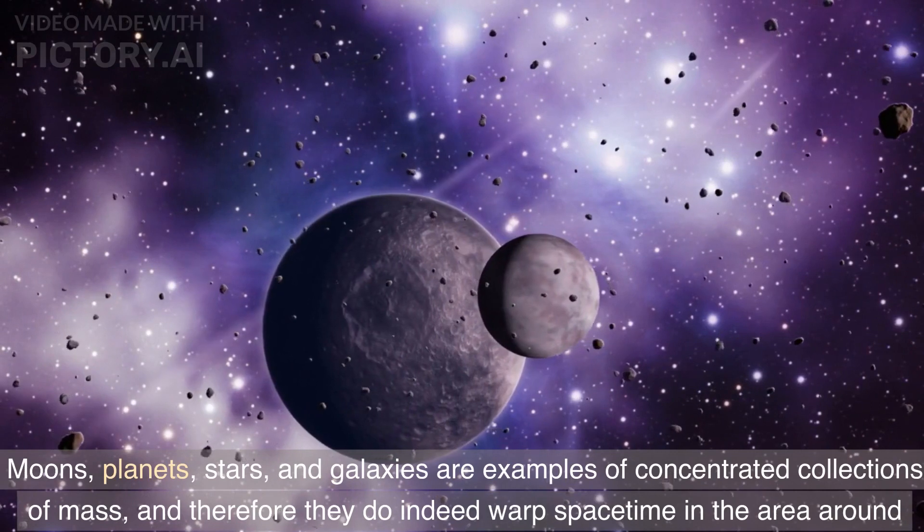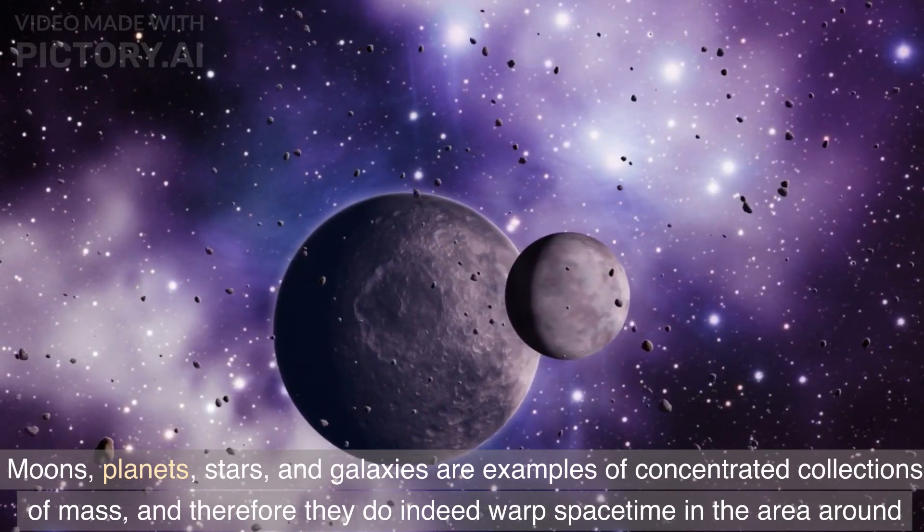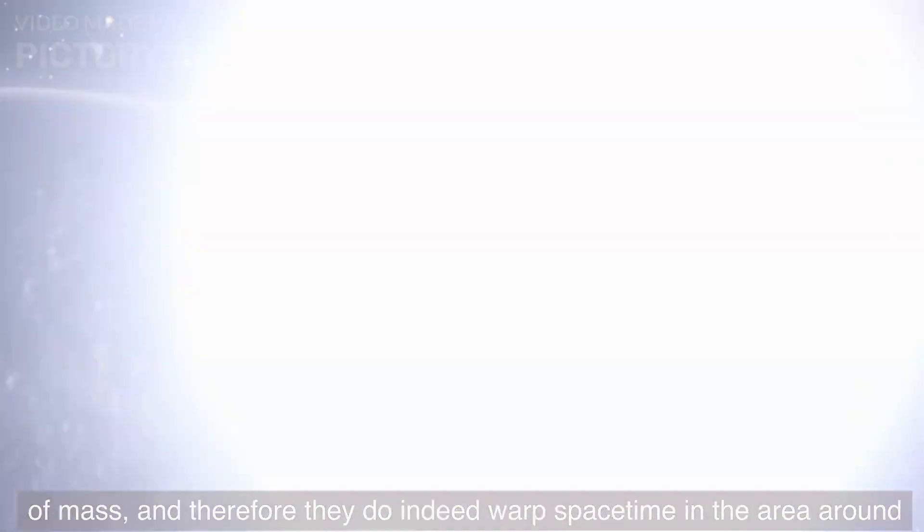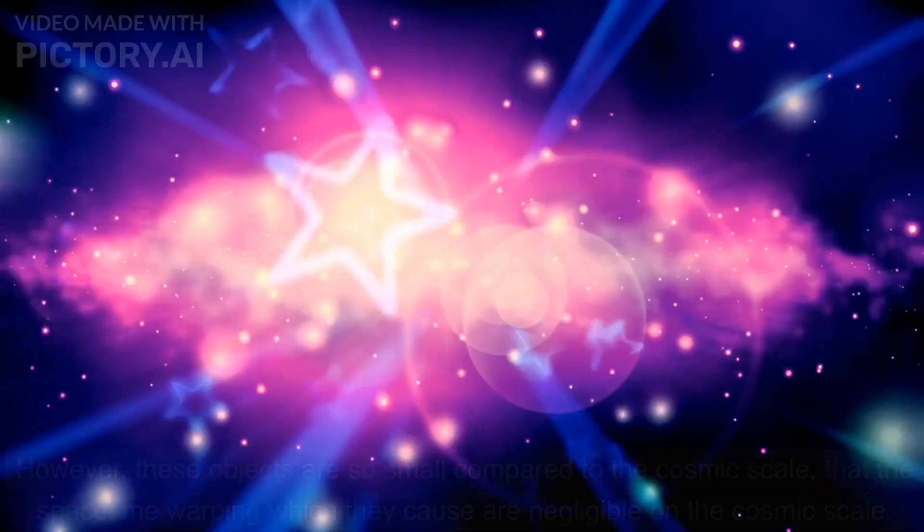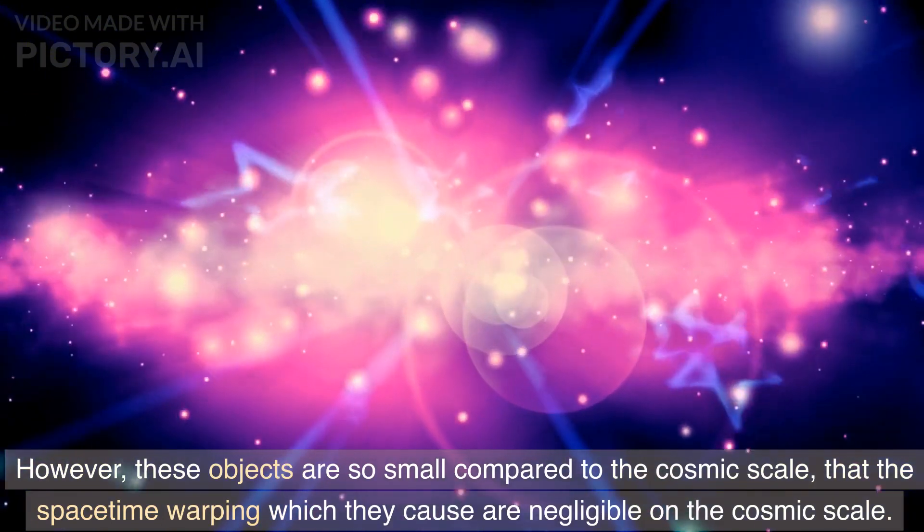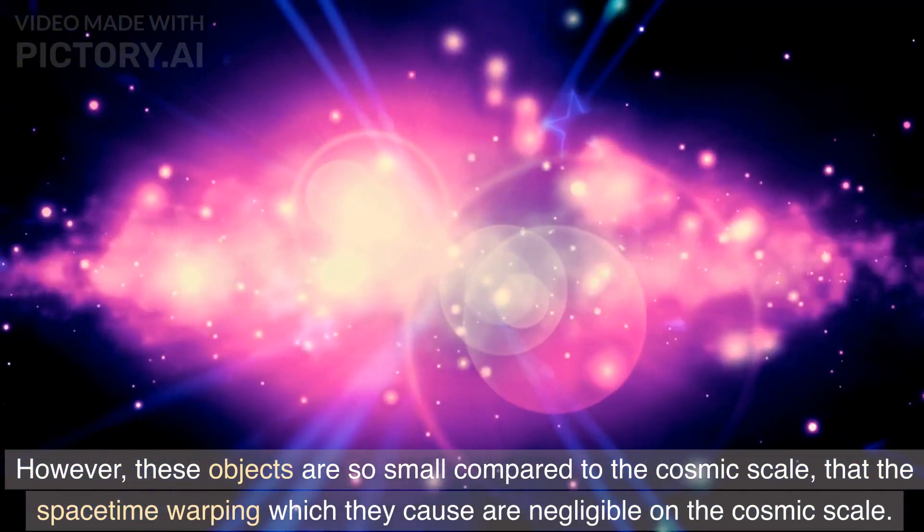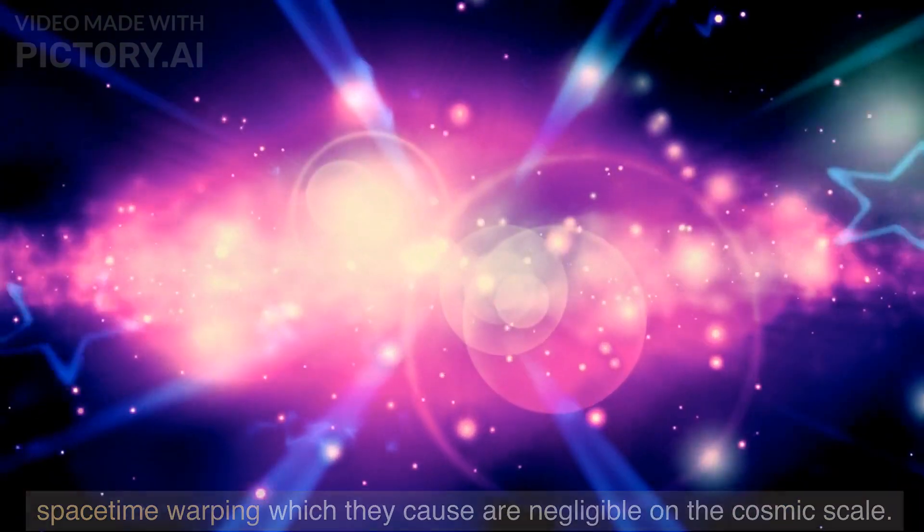Moons, planets, stars, and galaxies are examples of concentrated collections of mass, and therefore they do indeed warp spacetime in the area around them. However, these objects are so small compared to the cosmic scale that the spacetime warping which they cause are negligible on the cosmic scale.